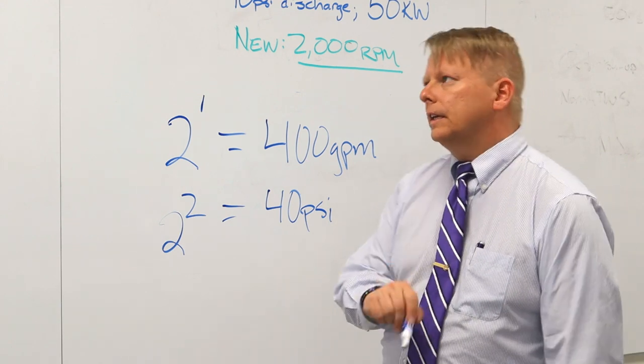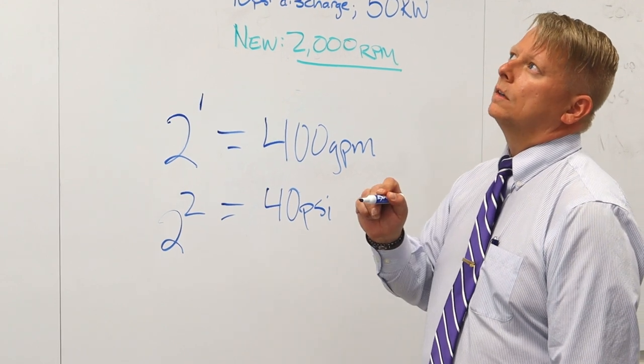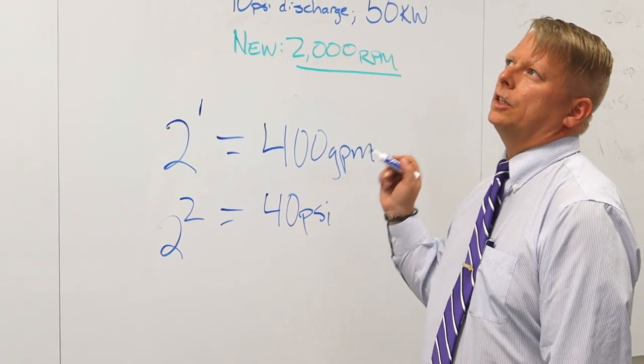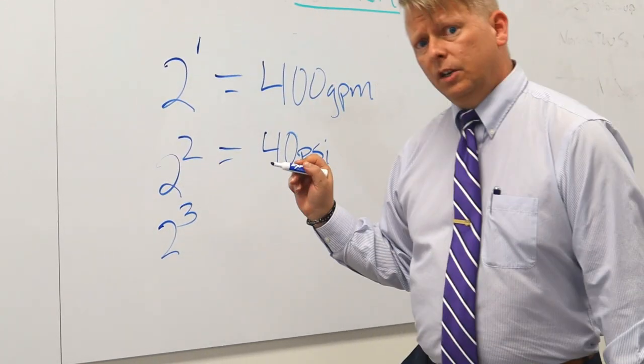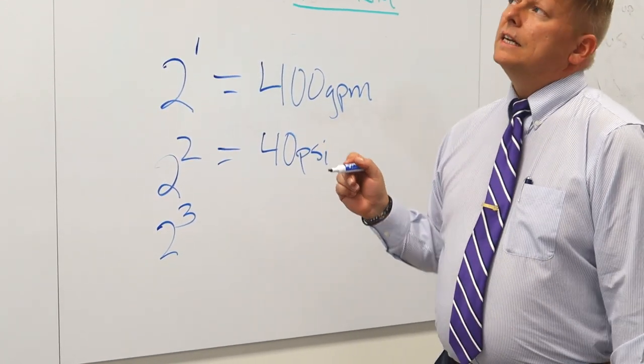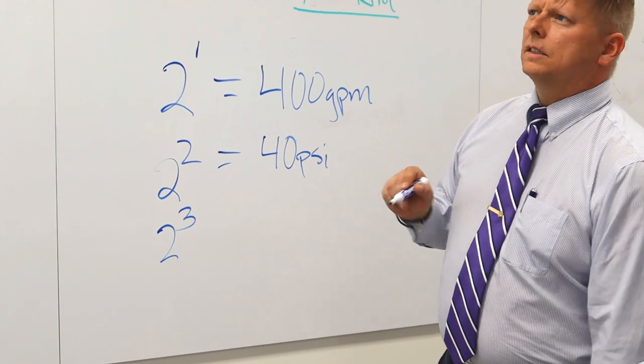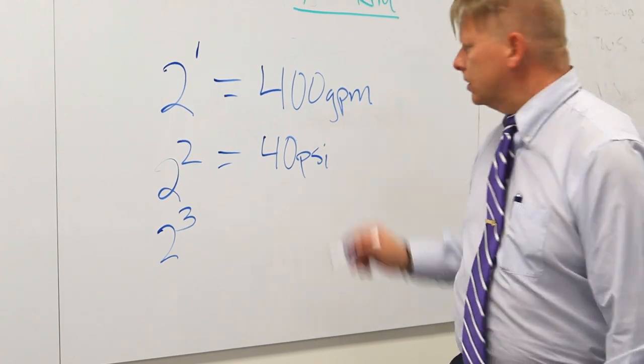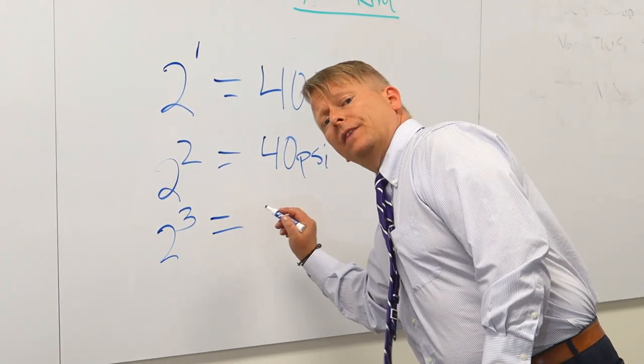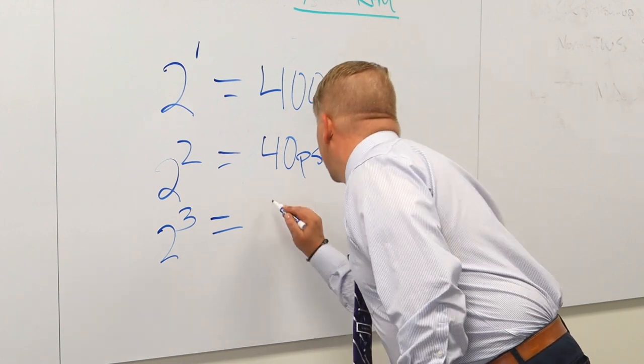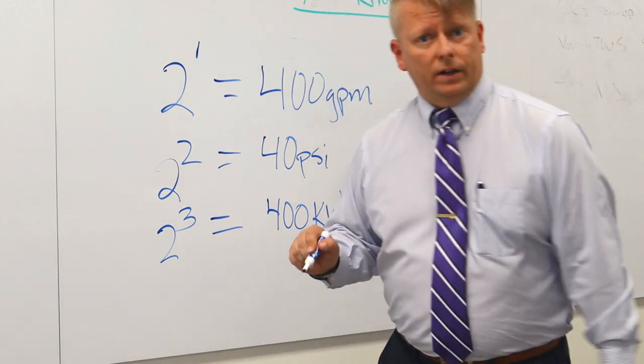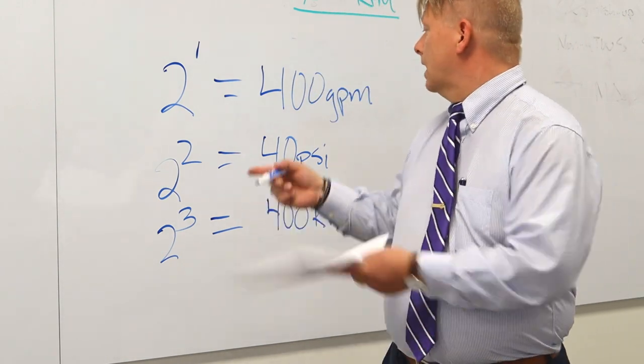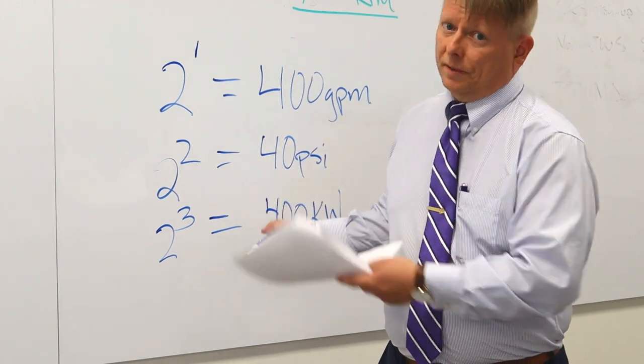And then finally, power proportional to speed cubed. So 2 cubed would be 8 times my initial value of 50 kilowatts. My new value is now 400 kilowatts, which came up to exactly the same value as we found by equation.